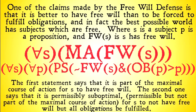The second statement says that it is permissibly suboptimal — permissible but not part of the maximal course of action — for S to not have free will but all obligations to be fulfilled. Now, one might argue that it's not even permissible for subjects not to have free will. But it seems that a world in which we are not free but all have lots of pleasure and all choose the good automatically with no evil is at least a permissible world — just not the maximal world. By being permissibly suboptimal, it's stating that it's less than the best possible world, which is what the free will defense is saying.